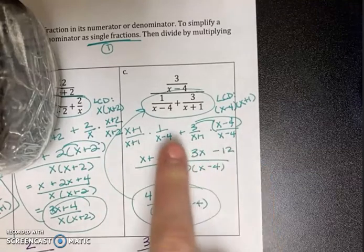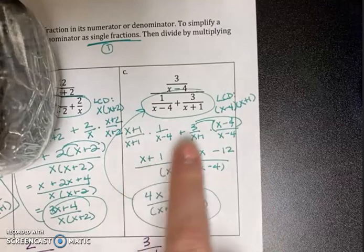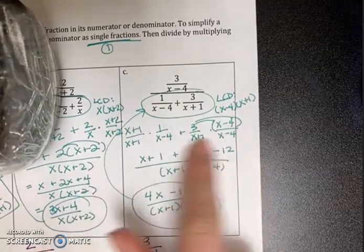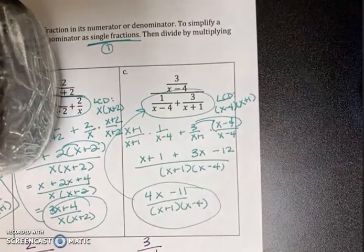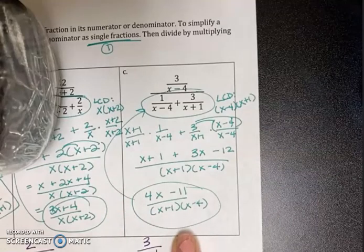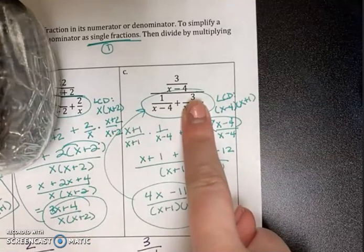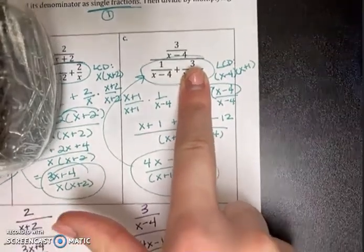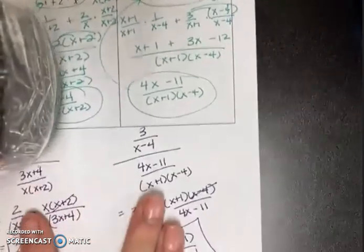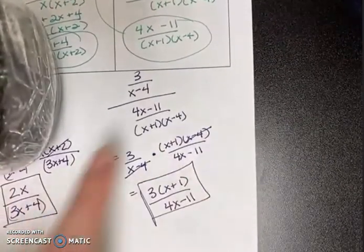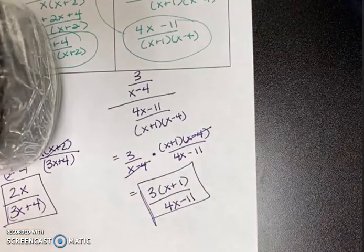Now that they had a common denominator, 1 times x plus 1 gave me this. 3 times x minus 4 gave me this. Combine like terms. Got me here. So remember, this 4x minus 11 over x plus 1 times x minus 4 replaces that addition of two rational expressions. So that brought me here. I just rewrote it as my single fractions.